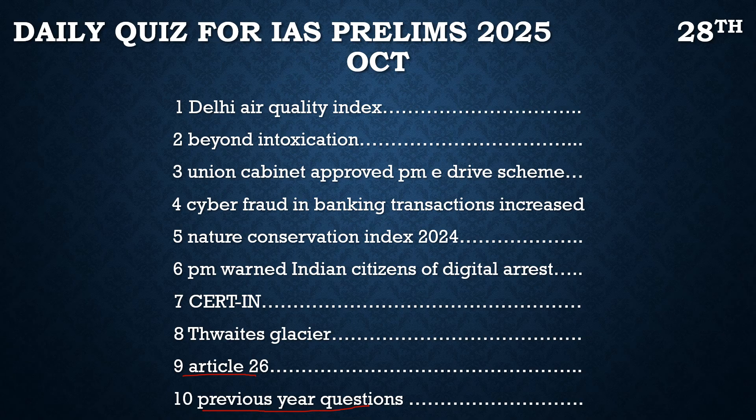Without wasting any time, let's have a brief look at the topics from which today's questions are taken — it won't take more than five or six minutes. The first article is about the Delhi Air Quality Index and why it is deteriorating. Majorly we say that stubble burning leads to the poor air quality index in Delhi, but this is not the only cause for air pollution in Delhi.